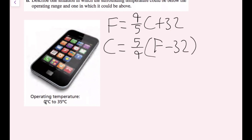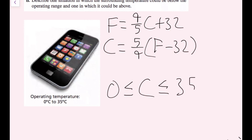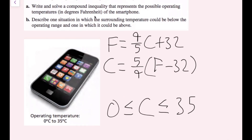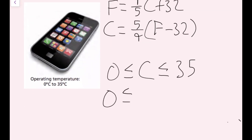The Celsius formula is C = (5/9)(F - 32). The operating temperature runs from 0°C to 35°C, including both endpoints. So I write: 0 ≤ C ≤ 35. Then I substitute C = (5/9)(F - 32) to get: 0 ≤ (5/9)(F - 32) ≤ 35.